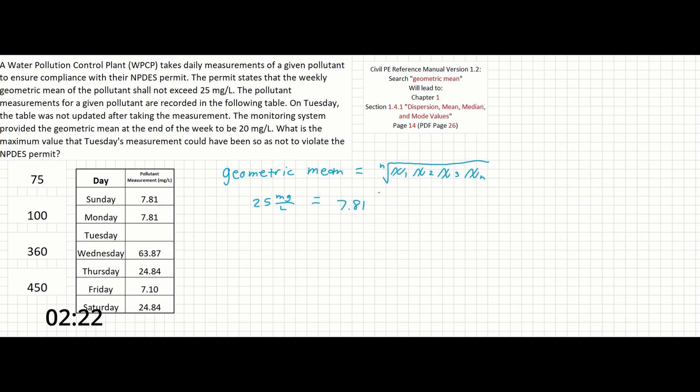So we have 7.81 (I'm going to ignore units in this problem as they're all consistent) times 7.81 times x on Tuesday times 63.87 times 24.84 times 7.10 times 24.84, and all of these are going to be raised to the 1/7 power, as we have seven days of the week.